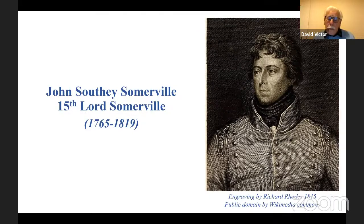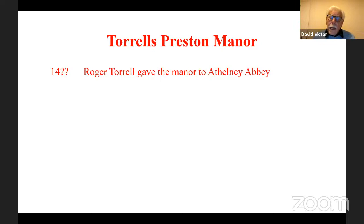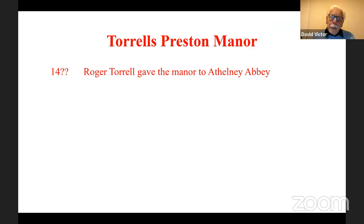I'd now like to talk about the other of the two manors. Torrells Preston Manor — always called Torrells Preston, not Preston Torrells — takes its name from the Torrel family, who came over with the Conquest and settled around England, quite a few of them in Somerset. One cadet branch broke off and came to Preston Bowyer, buying an estate there in the early 13th century. Then in the 15th century, he gave the estate — the manor — to Athelney Abbey, gaining to the benefit of his soul, no doubt.